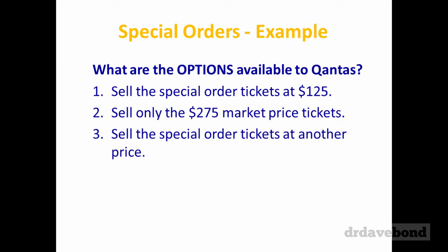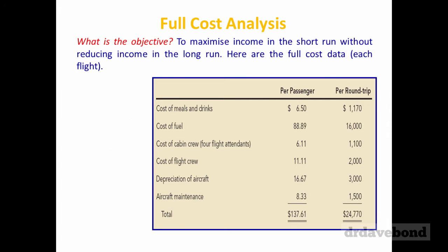So what are the options? Sell the special order tickets at $125, sell them for $275 and tell them no, or figure out some other price that works for everyone. The first thing to figure out is whether $125 is actually a good price — are they going to lose money by selling at $125? To look at this, we need to think about what costs are relevant for these new passengers.